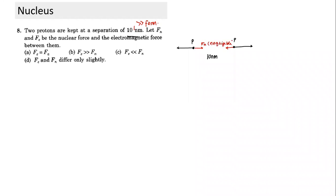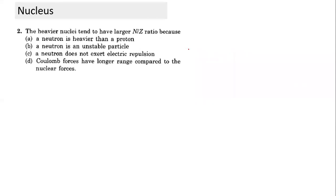At a separation of 1 Fermi, nuclear force dominates. When separation becomes something like 10 Fermi, electrostatic force dominates, because nuclear forces are short-range while electrostatic forces are long-range. This highlights the short-range nature of nuclear forces.